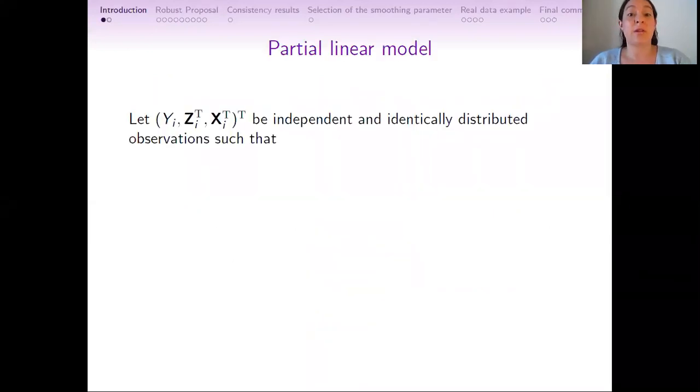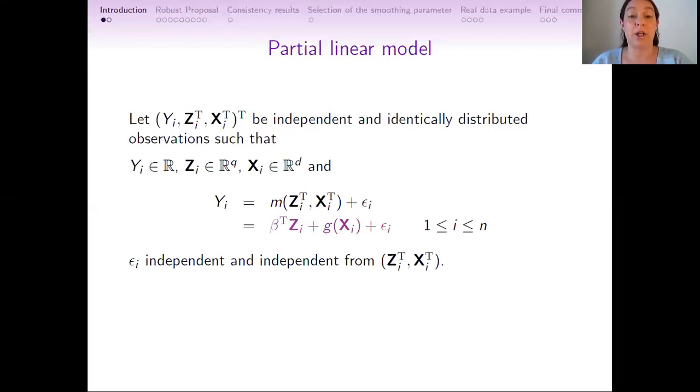Let's first recall what is a partial linear model. Let (Y_i, Z_i, X_i) be independent and identically distributed observations such that Y_i ∈ ℝ, Z_i ∈ ℝ^q, and X_i ∈ ℝ^d. They satisfy the semi-parametric regression model where the response variable Y_i is modeled as a multivariate function m of the covariates plus errors. This function m is of the form β^T Z_i plus a multivariate function ξ(X_i). The objects to be estimated are the vector β and the multivariate function ξ. The error is also considered independent and independent from the covariates.